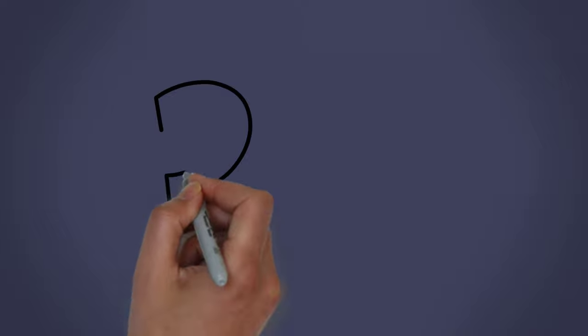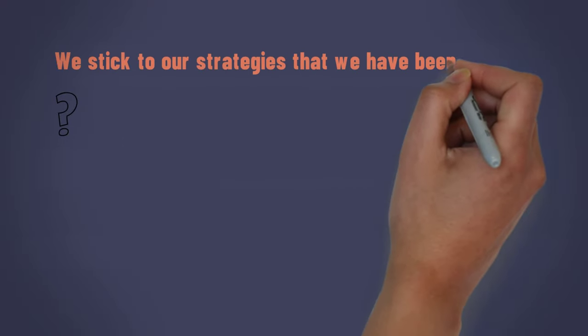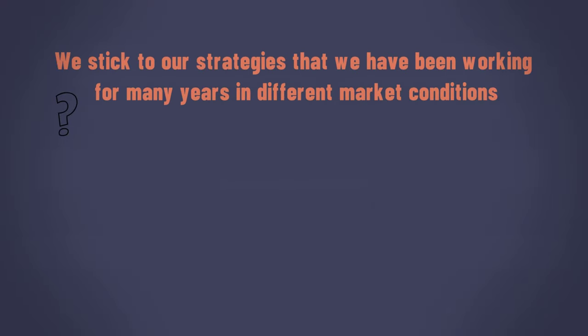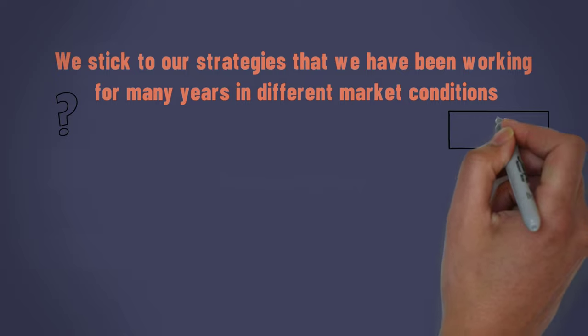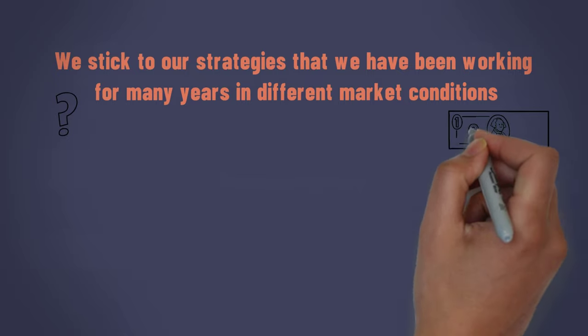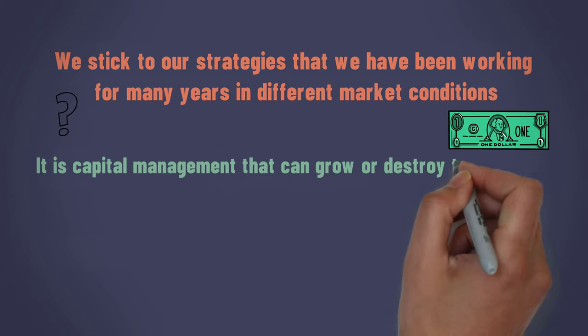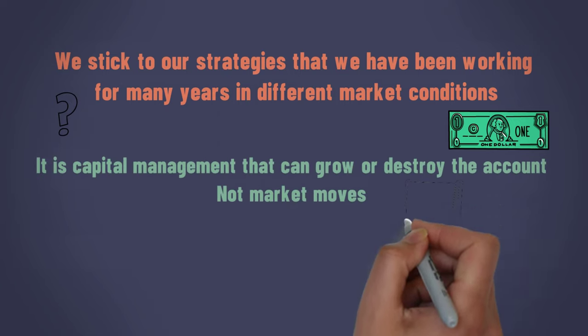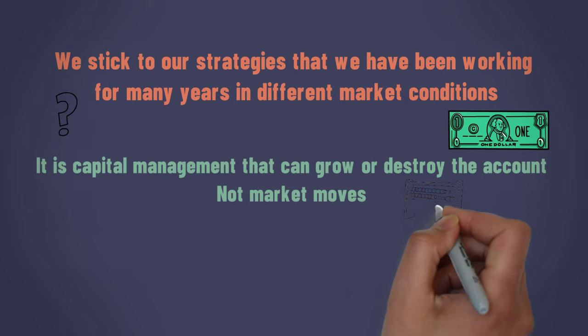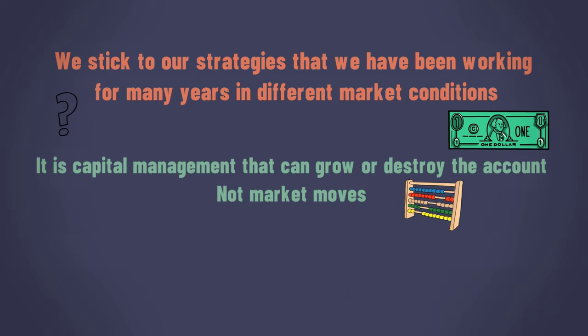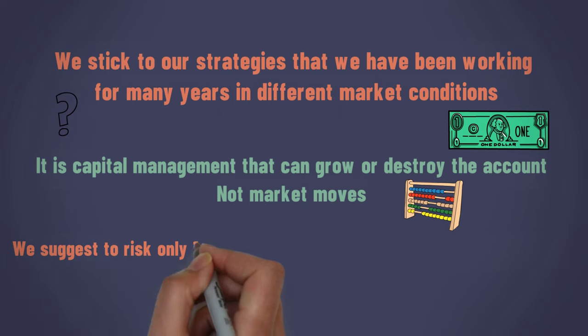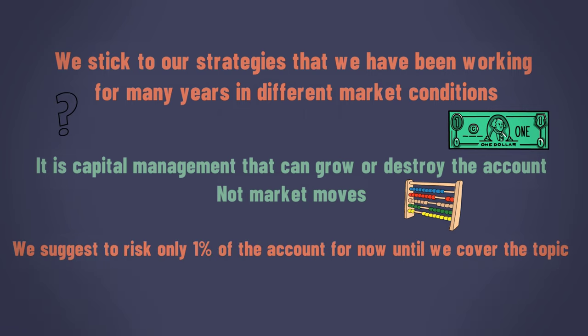One-star signals are either analyzed and published according to your request, or there is a small chance that we will have a successful trade. You may ask why we publish signals that have a low chance of success. We are traders and we trade all positions based on our strategy, but the main difference between each trade is the amount of risk we take. In general, I suggest you always risk 1% of your account size for each trade.